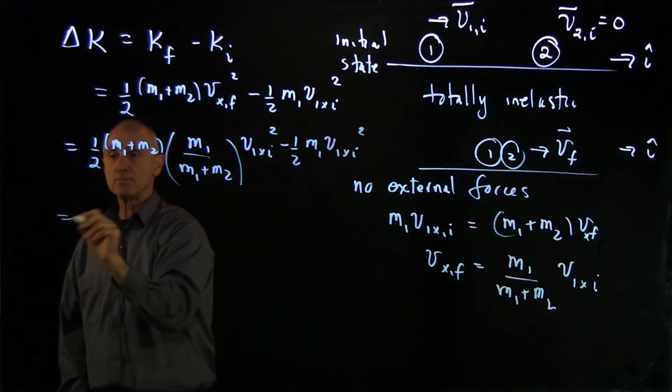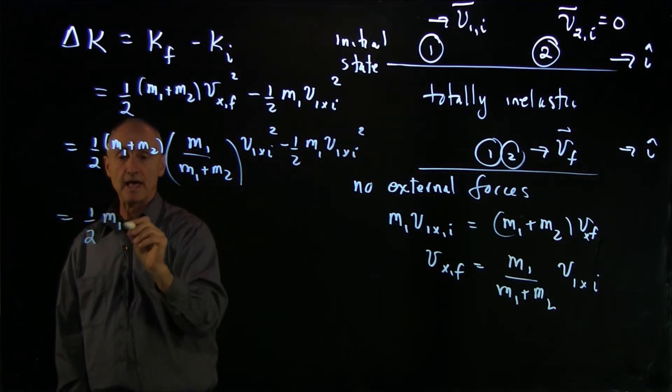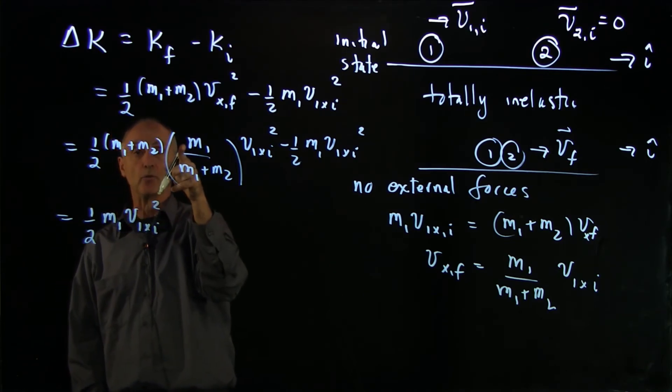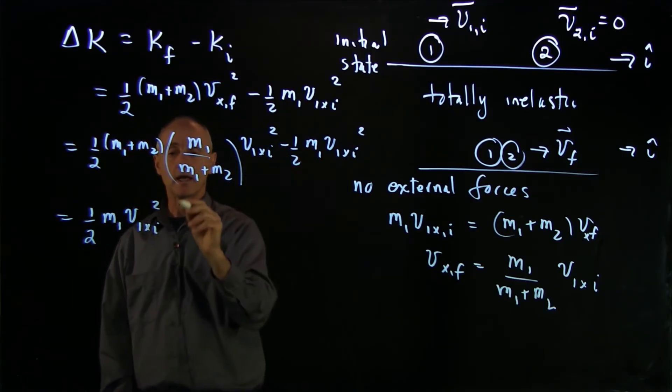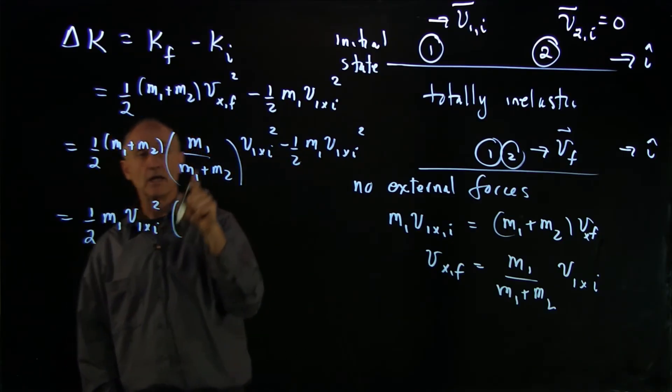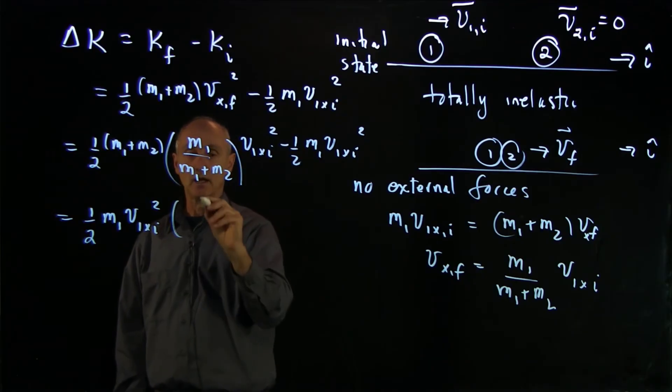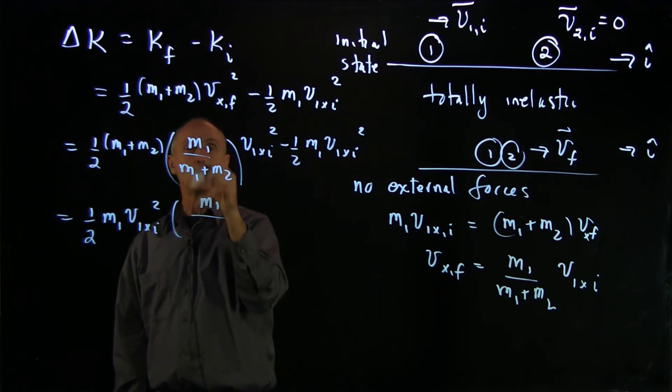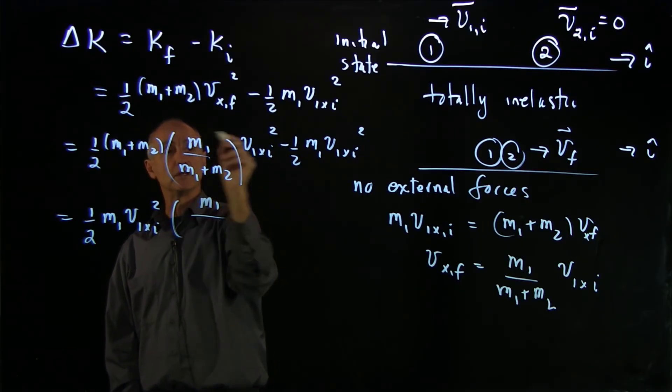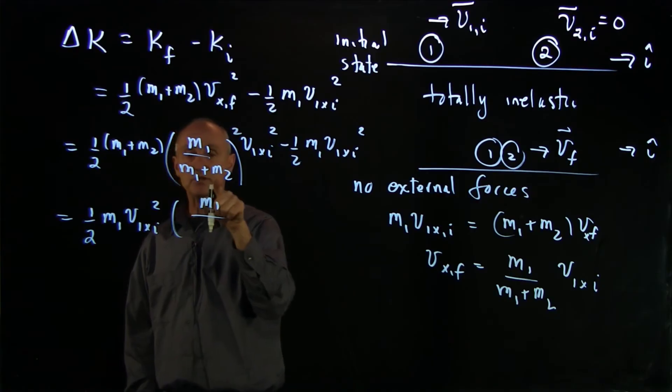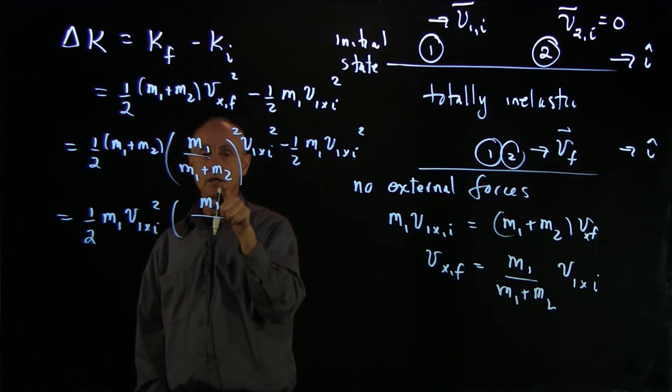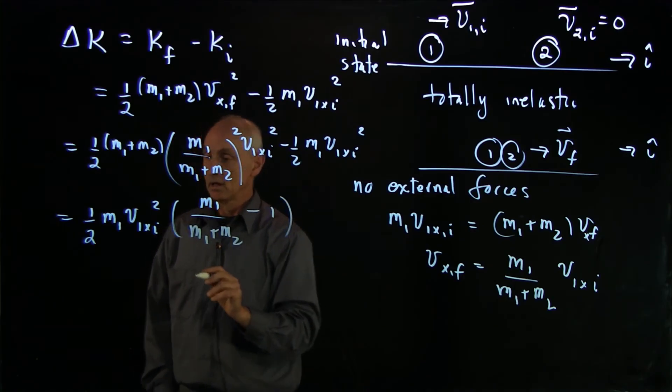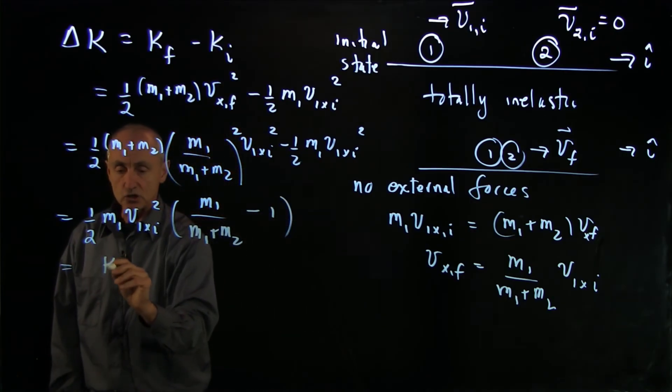And now let's pull out the one half m1 v1x initial squared. But what we're left with here is another factor of m1. And downstairs we have an m1 plus m2 outside, but an m1 plus m2 inside. So there's an m1 plus m2 minus 1. Now this is the initial kinetic energy. And when we subtract these terms, we have negative m2 over m1 plus m2.